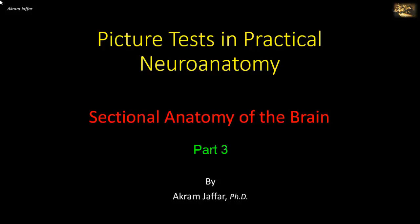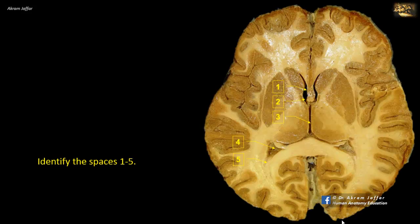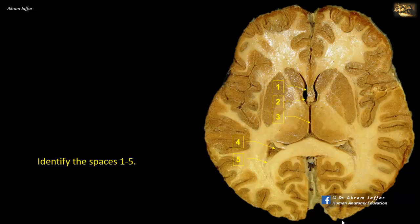Now I will deal with the sectional anatomy of the brain. Identify the spaces 1 to 5. This is a horizontal section through the cerebral hemisphere at the level of the interventricular foramen of Monroe, number 2. The foramen opens into the lateral ventricle from one side. Here you can see the anterior horn is shown, that is number 1.